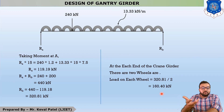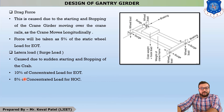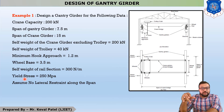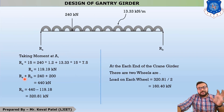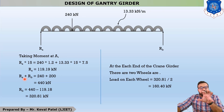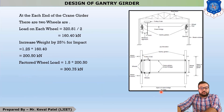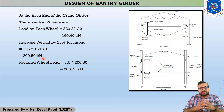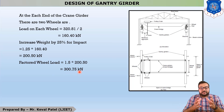As discussed, impact load must also be added as it is a moving load. Referring to IS 875 Part 2, for EOT — electrically operated travelling crane — you must consider 25% additional load on the wheel load. So the wheel load with impact = 160.40 × 1.25 = 200.50 kN. This is the unfactored load. Applying the load factor, the factored wheel load = 200.50 × 1.5 = 300.75 kN. This completes step number 1.